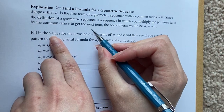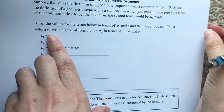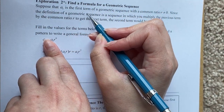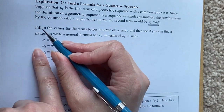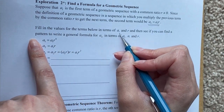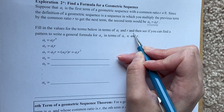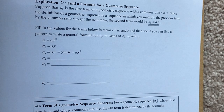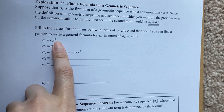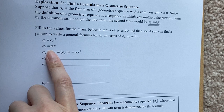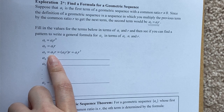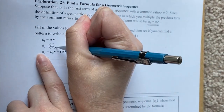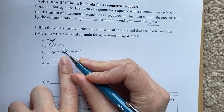To find the formula for a geometric sequence, suppose A₁ is the first term with common ratio R different from zero. Using the recursive definition: A₁ equals A₁·r^0 = A₁. Then A₂ = R·A₁. For A₃, you plug in A₂, combining exponents to get A₁·R². For A₄ = A₃·R = A₁·R³.